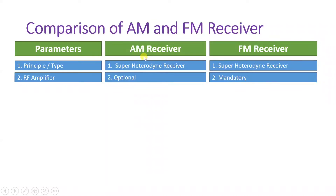When we talk about RF amplifiers, in an AM receiver the RF amplifier is optional, but in an FM receiver the RF amplifier is mandatory. It is compulsory to use an RF amplifier in an FM receiver with the superheterodyne receiver, while in the case of an AM receiver it is optional.